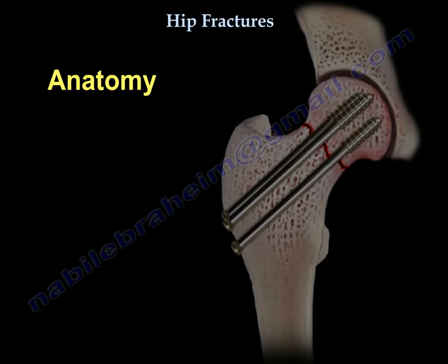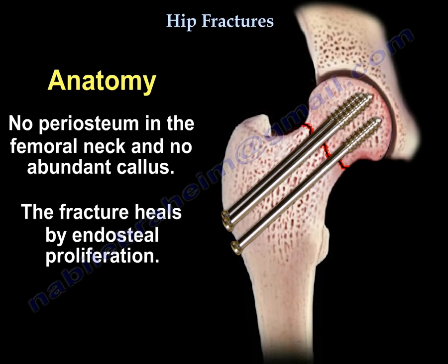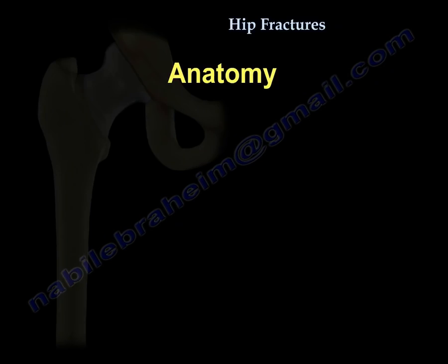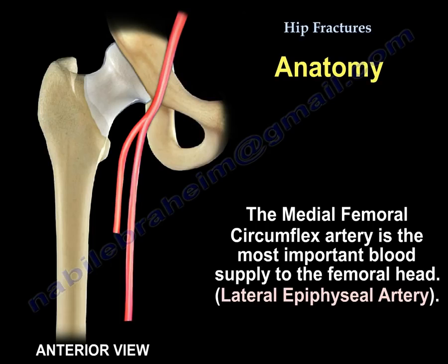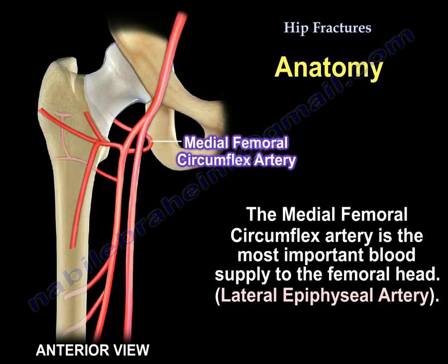There is no periosteum in the neck, no abundant callus, and the fracture heals by endosteal proliferation. The medial femoral circumflex artery is the most important blood supply to the femoral head — specifically the lateral epiphyseal artery.